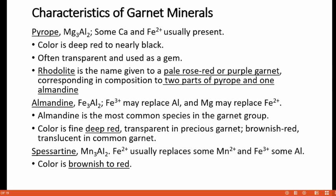Almandine is chemically Fe3Al2Si3O12, where Fe3+ may replace some aluminum in its octahedral position and magnesium may replace some iron in its cubic site. Almandine is the most common species in the garnet group. Its color is fine deep red, transparent in precious garnet, and brownish red translucent varieties are also formed in common garnet. Spessartine has a chemical composition of Mn3Al2Si3O12, in which Fe2+ usually replaces Mn2+ in its cubic site and Fe3+ replaces some aluminum in its octahedral position. The color of spessartine is brownish to red.